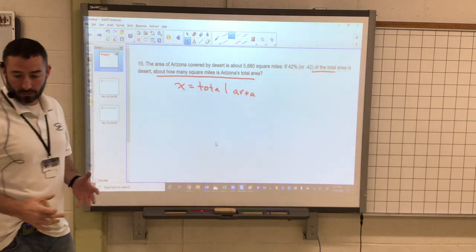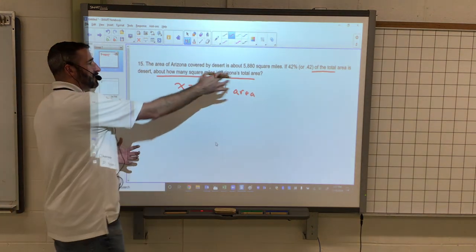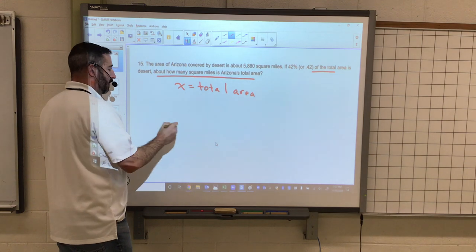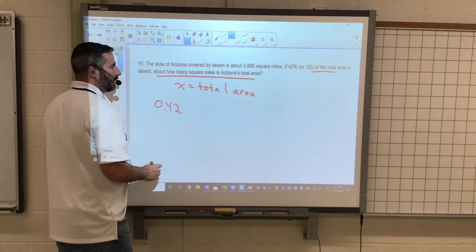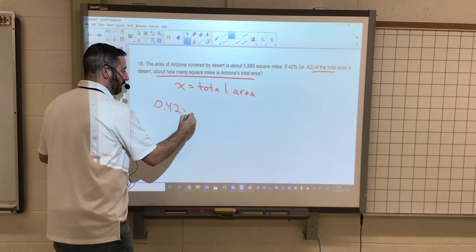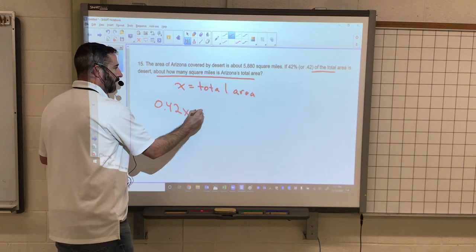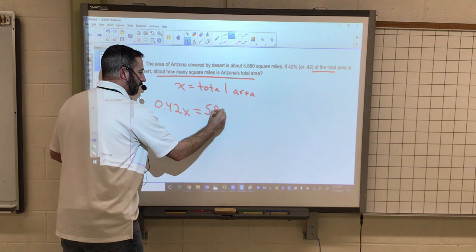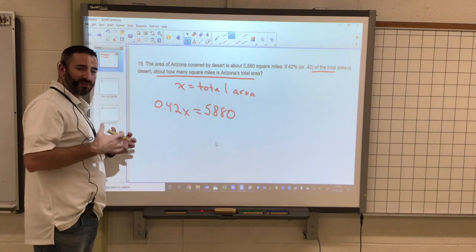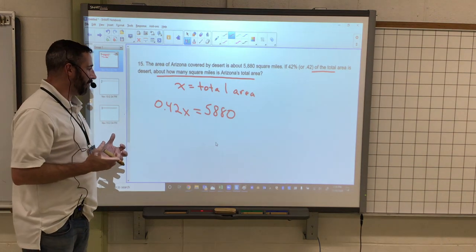What we do know is that 42 percent of the total area, or 0.42, of the total area, so we multiply that by X, equals 5,880. So we now have set up our equation to solve.